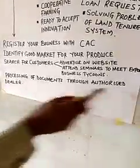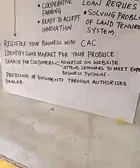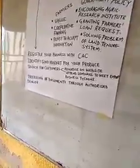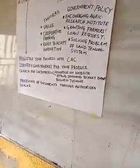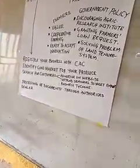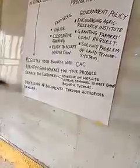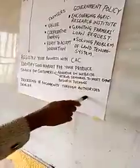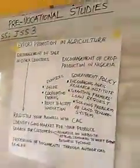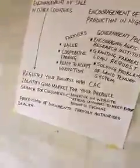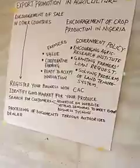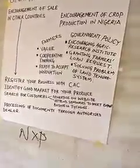The next step is processing of documents through authorized dealers. Export business is all about documentation. You need these documents to get your money, and your customer abroad needs them to clear their goods in their own country. To process documents, you register with an authorized dealer — any commercial bank can do this for you. The bank will process a form known as the NXP form, or Form NXP.